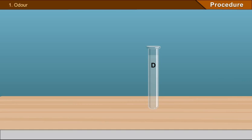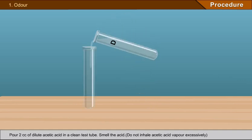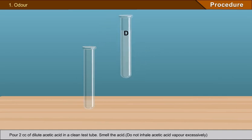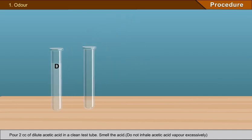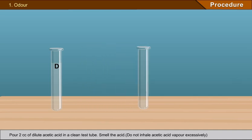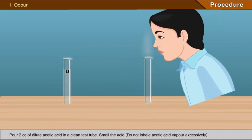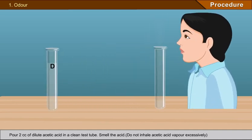Experiment 1 - Odor: Pour 2 cc of dilute acetic acid in a clean test tube and smell the acid. Do not inhale acetic acid vapour excessively. Observation: it has a peculiar pungent smell, somewhat sour in nature, like that of table vinegar.